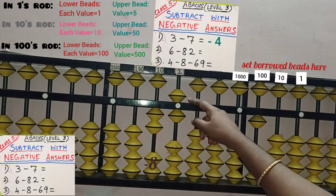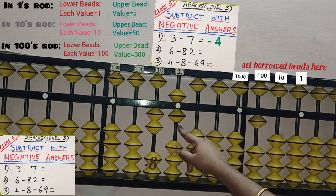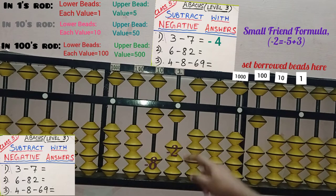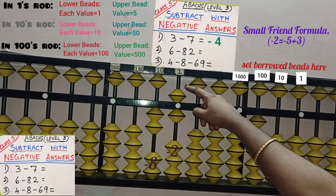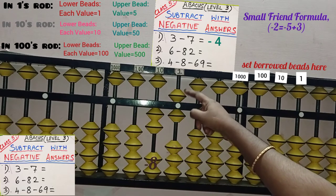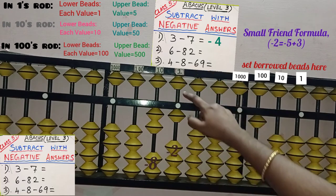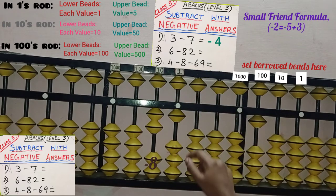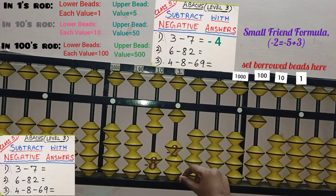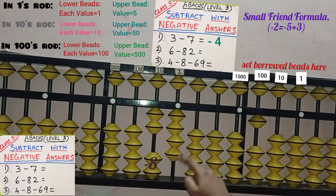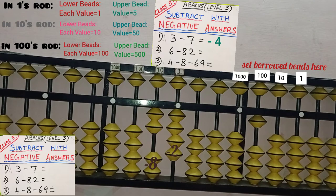Next, remove 2 beads from 1's rod. In the lower part, only 1 bead is available to remove. Hence, direct subtraction is not possible here. We should check small friend. Minus 2 means check if we can do minus 5 here — 5 beads are available to remove. So do minus 5 while removing small friend. 2's small friend is 3, so add 3 here. Minus 5 plus 3 equals minus 2 completed. Sum is completed.